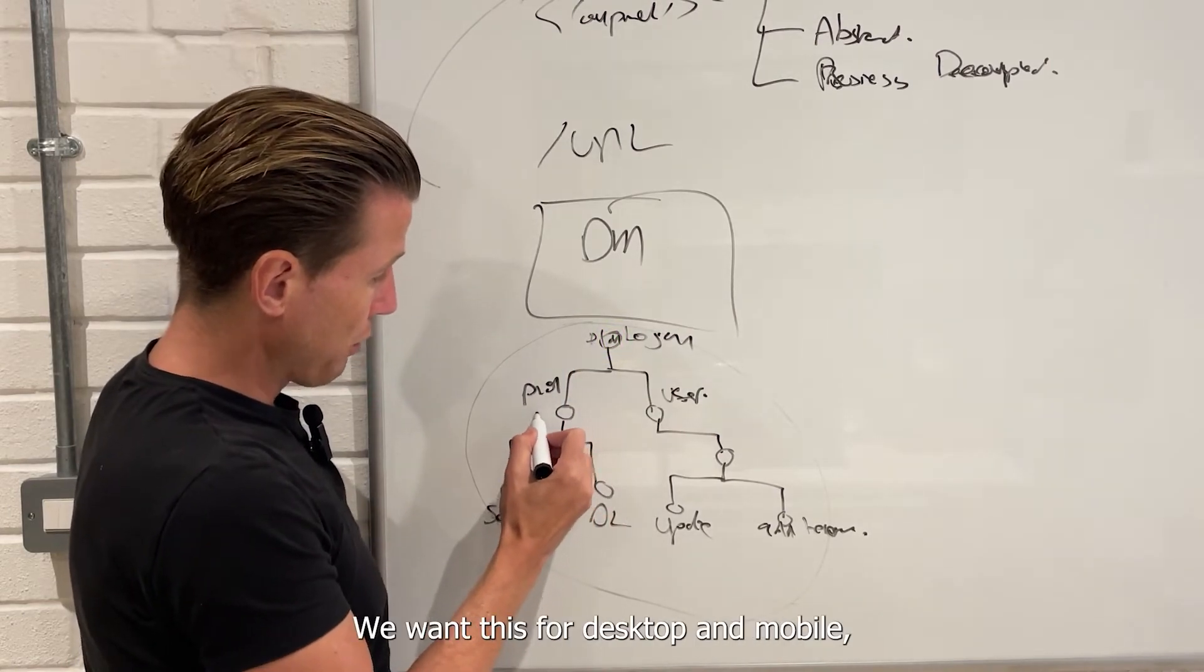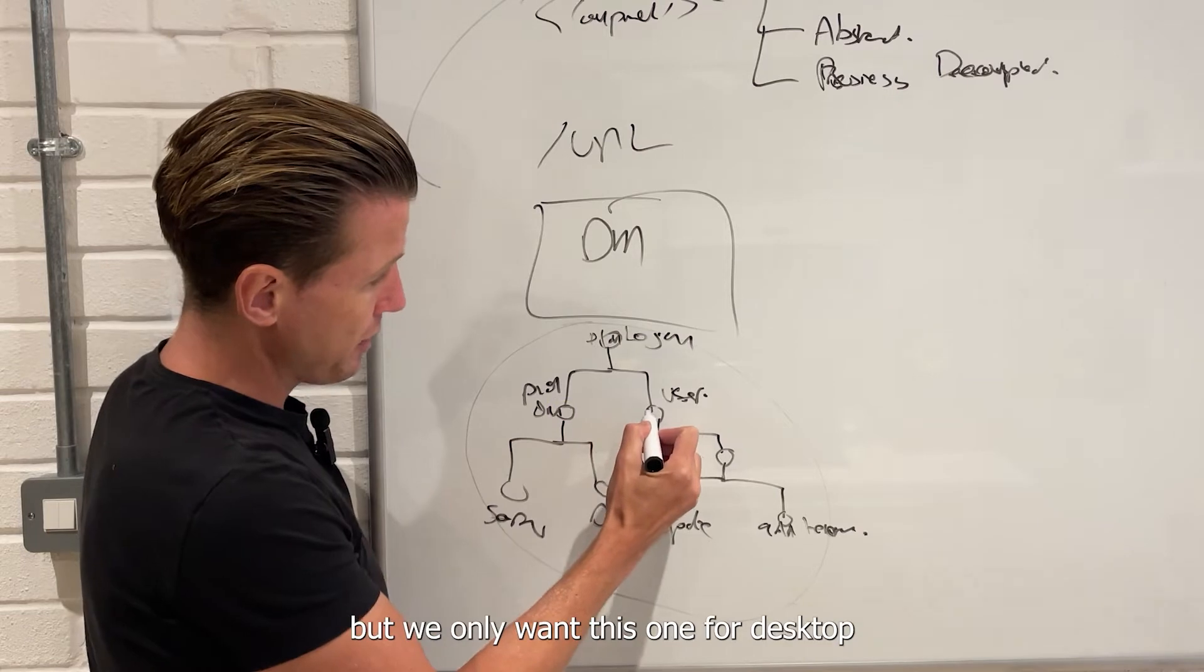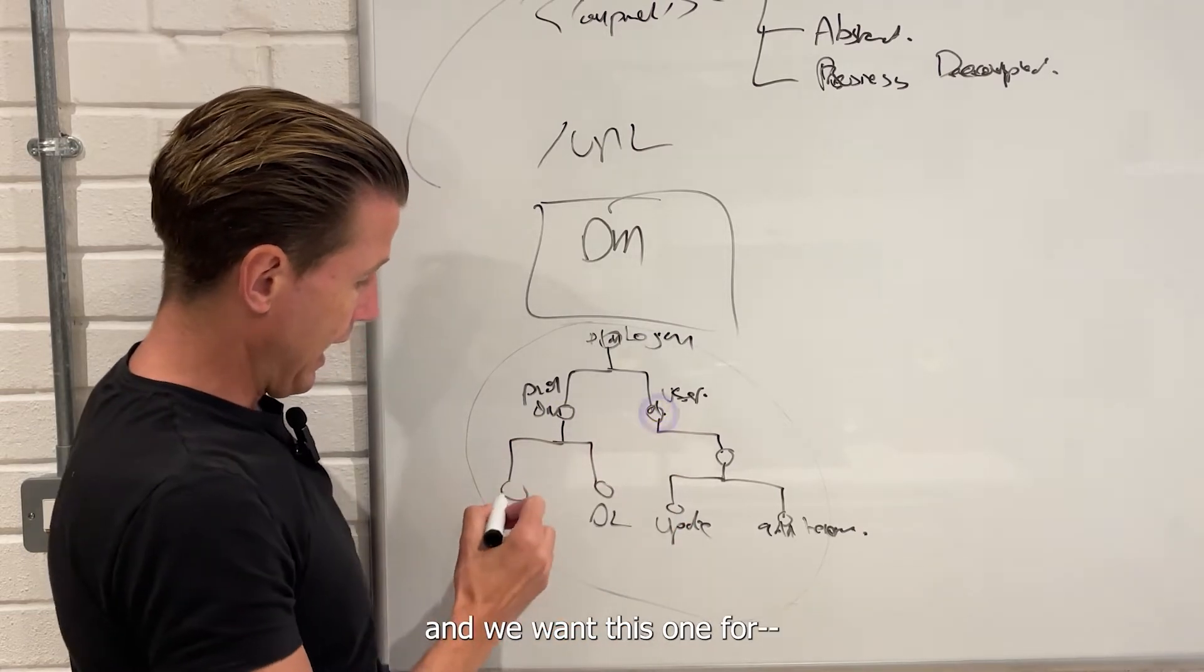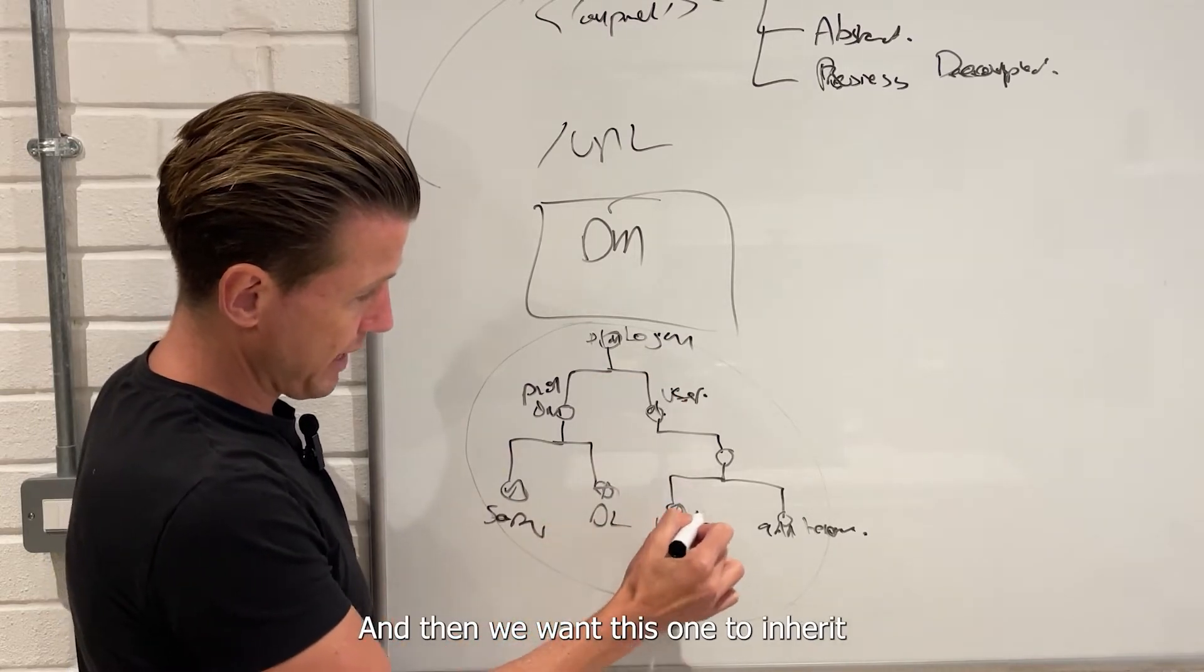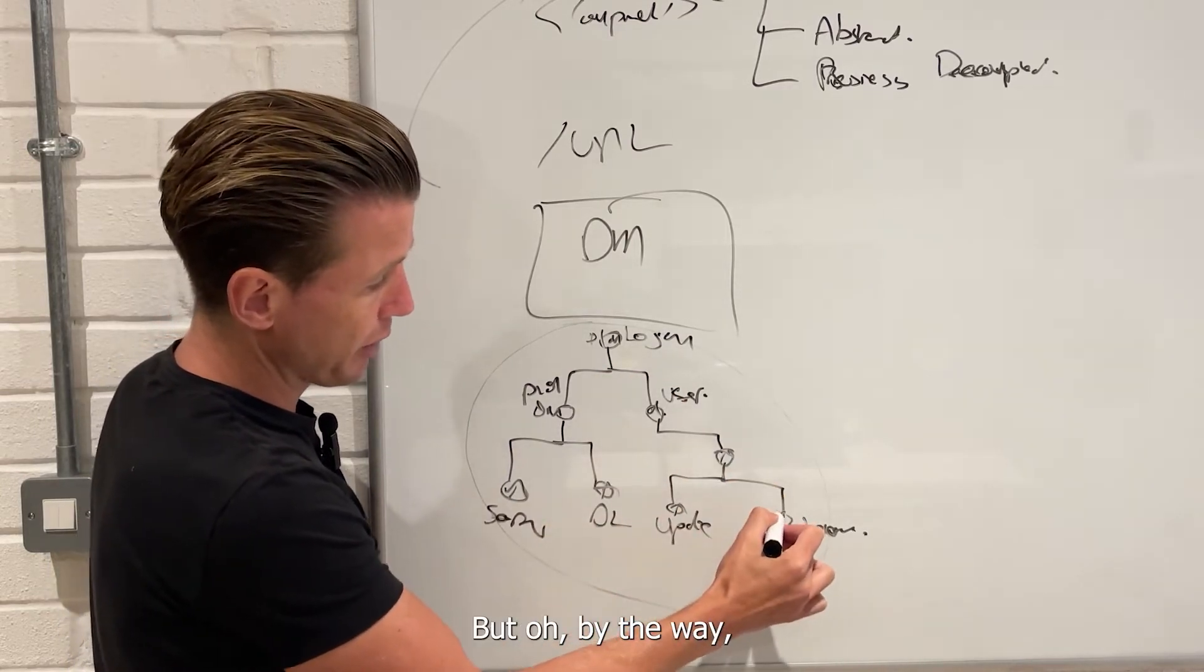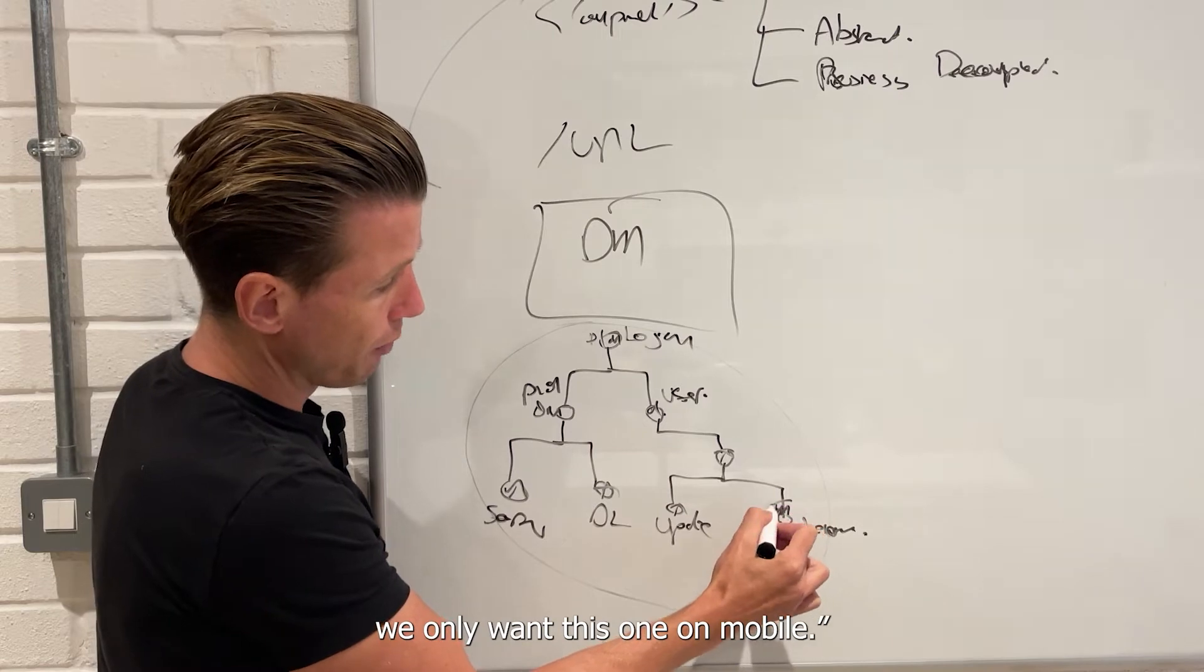We want this for desktop and mobile, but we only want this one for desktop. And we want this one to just inherit whatever the parent has. And then we want this one to inherit whatever the parent has. But we only want this one on mobile.